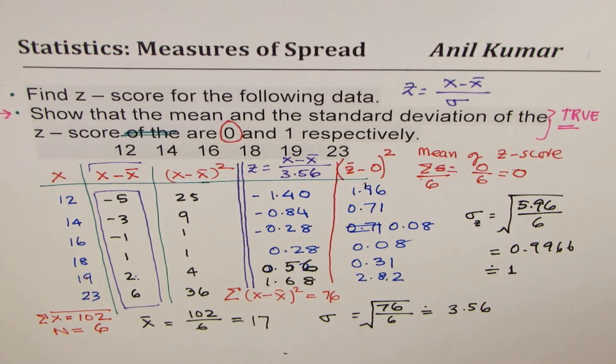So that's very important to understand. For all the z-scores, whenever we calculate, their mean is 0 and their standard deviation is 1. Feel free to share your comments and if you like and subscribe my videos, that'll be great. Thank you for watching and all the best.